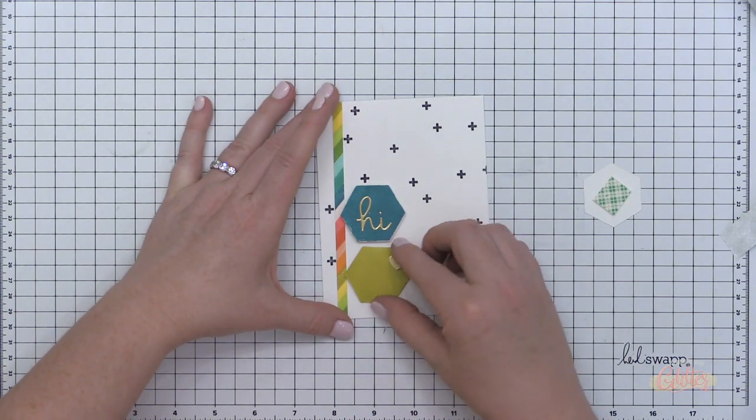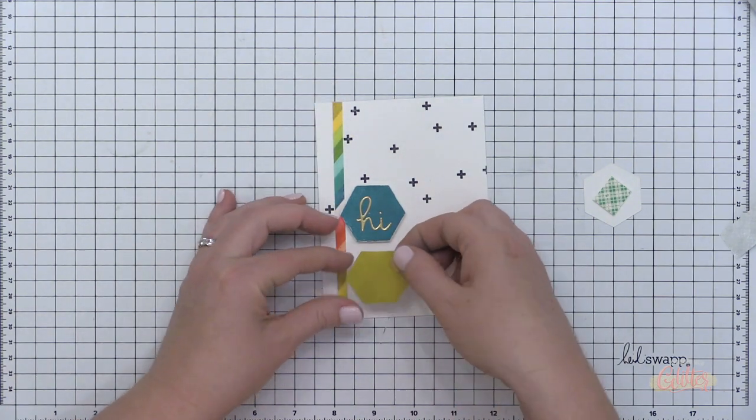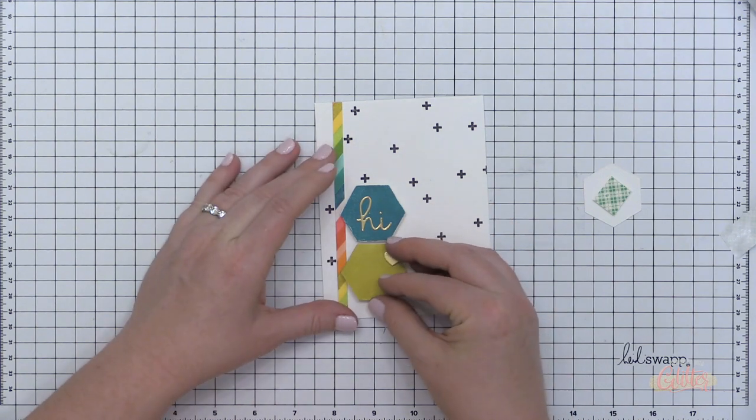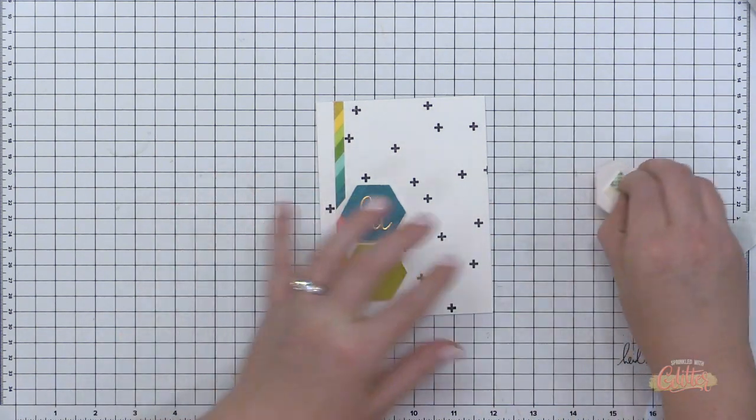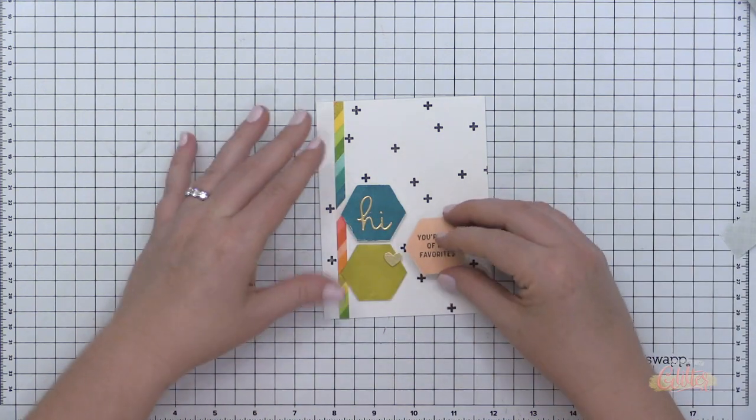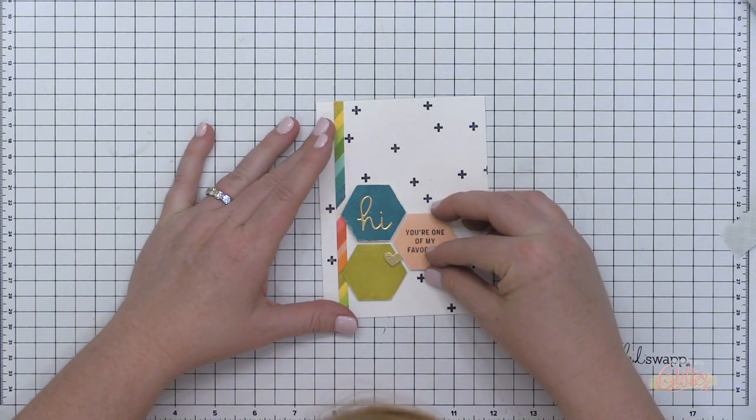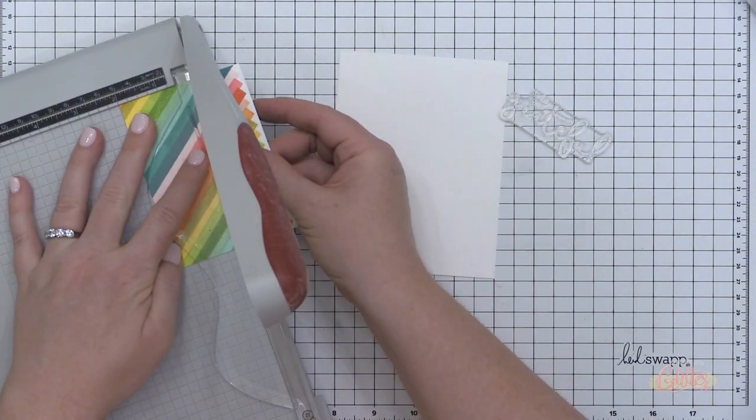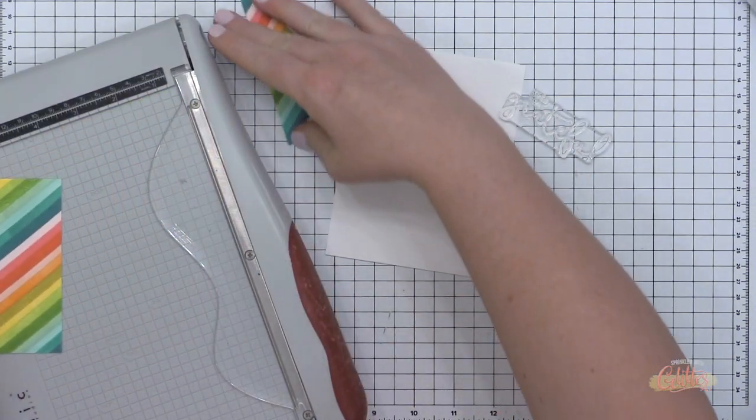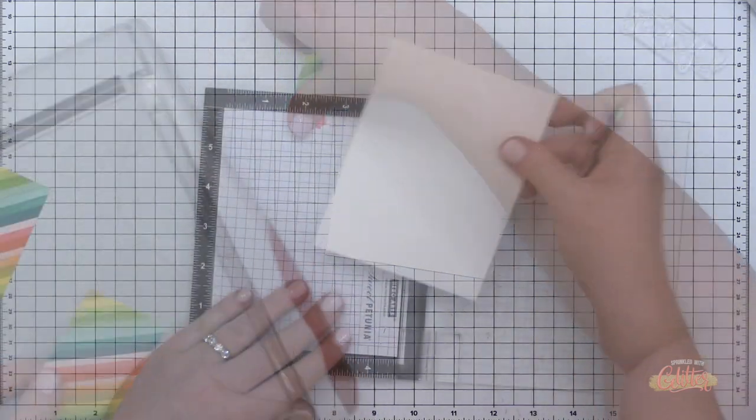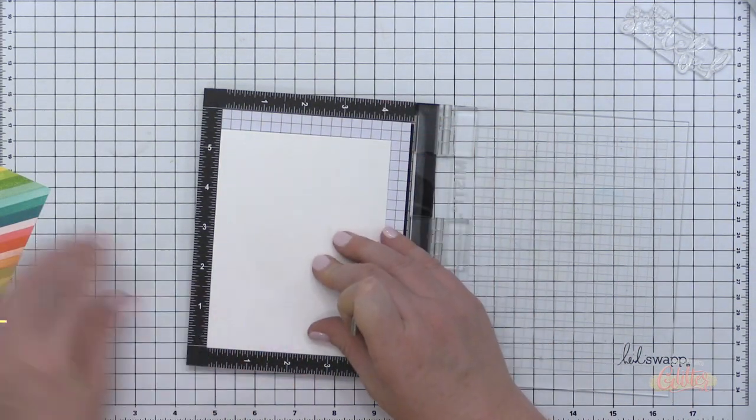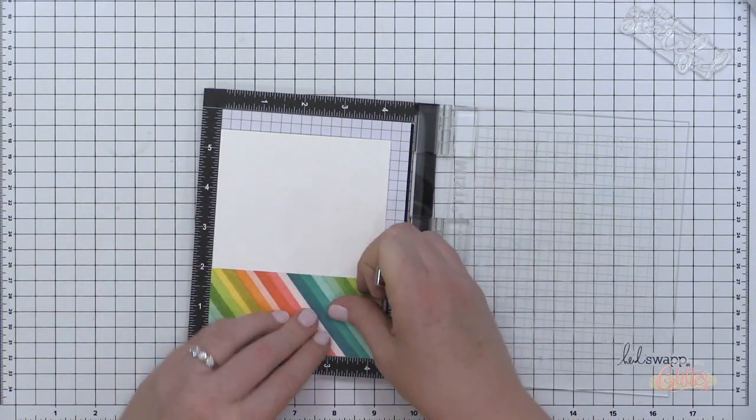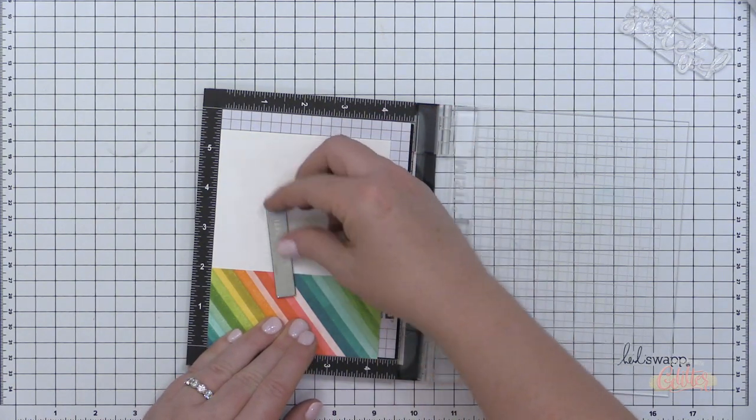Instead of the 'miss you' sentiment on that hexagon, I die cut the little 'hi' which is from the hexagon labels die set that coordinates with the Hey Bestie stamp set that I'm using here. On this grapefruit colored hexagon I stamped one of the sentiments from the Hey Bestie stamp set that says 'you are one of my favorites.' If you know, you know. I say that at the end of a lot of my videos if you stick around to the very end. That's my second card.